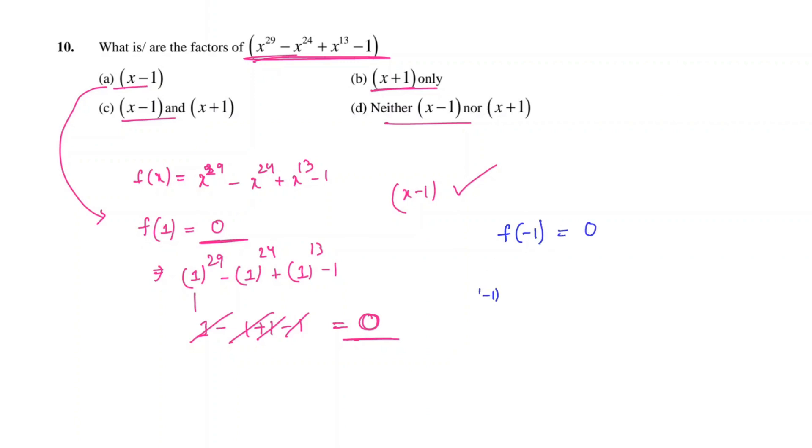Substituting x as minus 1, we get minus 1 whole power 29 minus minus 1 whole power 24 plus minus 1 power 13 minus 1. Minus 1 power odd is minus 1 and minus of minus 1 power even gives plus 1, plus minus 1 whole power 13 odd again, so minus 1 minus 1. This gives minus 4 as the remainder but not 0.